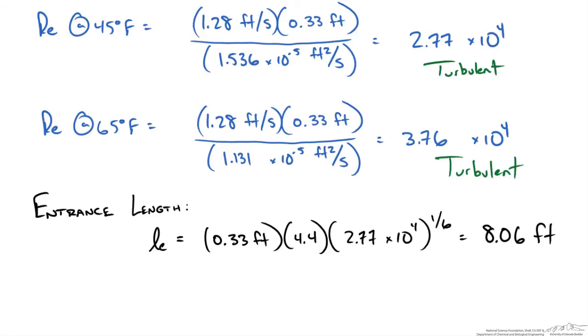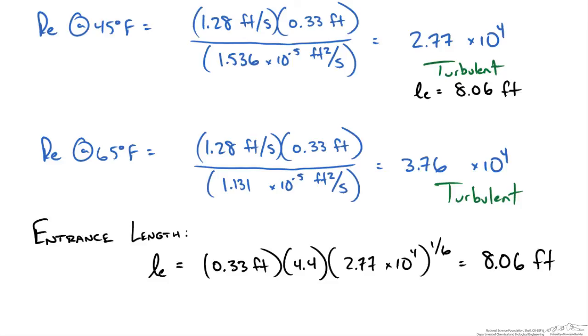Now if we repeat this for flow at 65°F, we get 8.49 feet. Indeed, as we increase the temperature we would expect a higher entrance length into the pipe because our Reynolds number is increased due to the lower viscosity of our fluid.